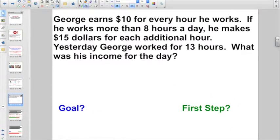Okay, let's take a look at our next one if we're ready for it. Here, George earns $10 for every hour he works. There's our period. Let's get that picture in our mind. $10 for every hour he works. But here's something else. If he works more than eight hours a day, he makes $15 for each additional hour. After he puts in his regular eight hours, if he's working any overtime, he's now getting time and a half, which is $15. Yesterday, George worked for 13 hours. What was his income for the day?